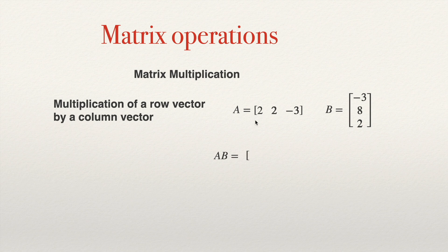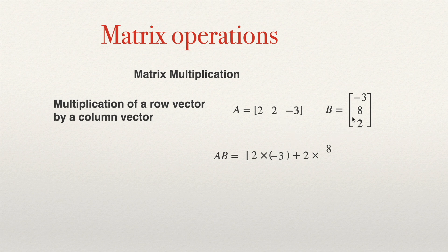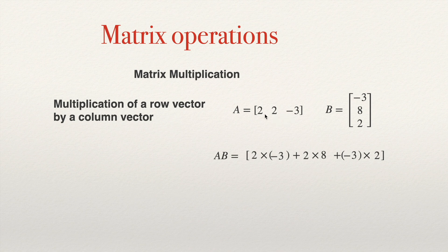We can write that AB will be the product of the first entries of the first matrix multiplied by the first element of the second matrix, plus the second element of the first matrix multiplied by the second element of the second matrix, and so on. The condition is that the first matrix must be a row matrix and the second must be a column matrix. The result will be a number.